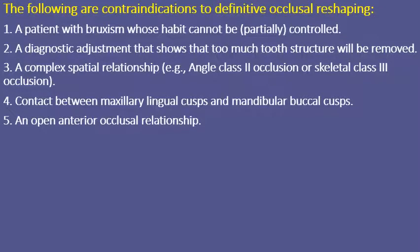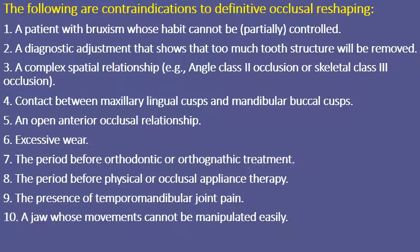Contraindications for occlusal reshaping include: uncontrolled parafunctional habits, cases requiring excessive tooth structure removal, complex skeletal relationships such as Class II or Class III, contact between the lingual cusp of maxillary teeth and the mandibular buccal cusp, open bite, excessive wear, and patients in the period before orthodontic or orthognathic treatment.